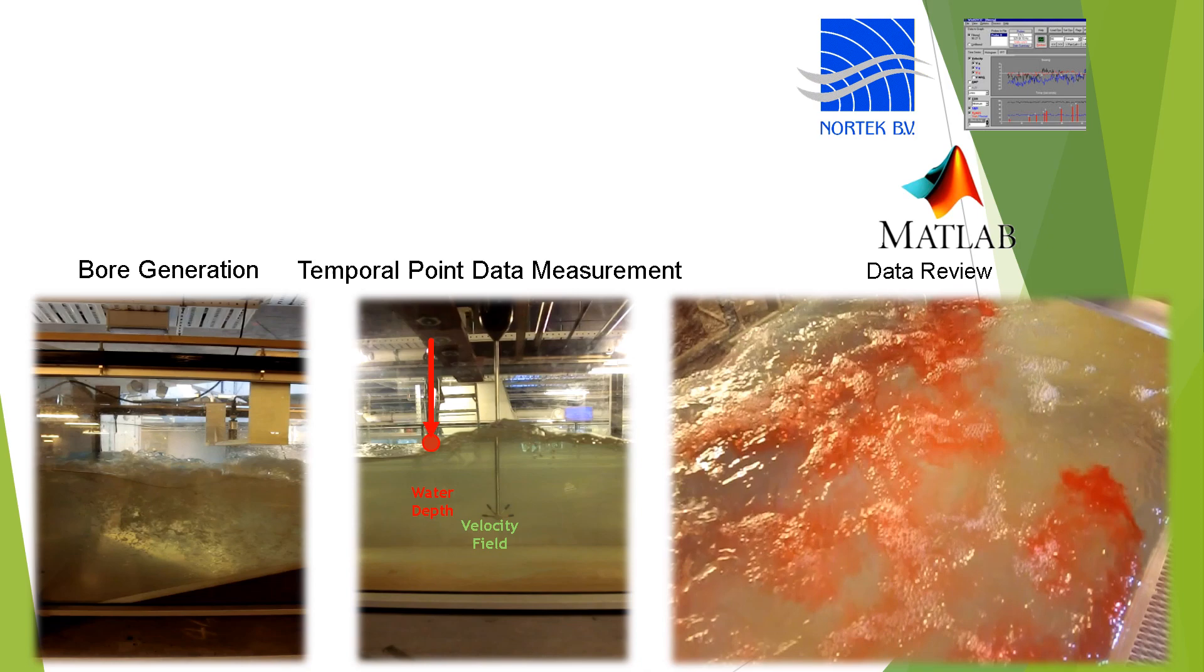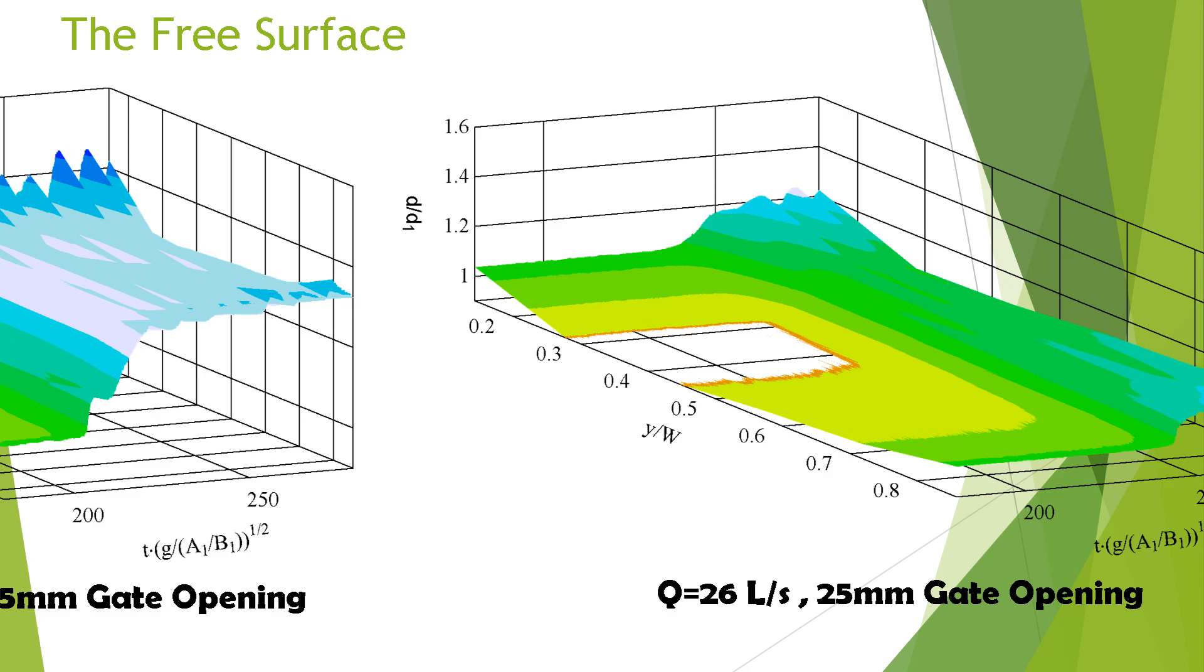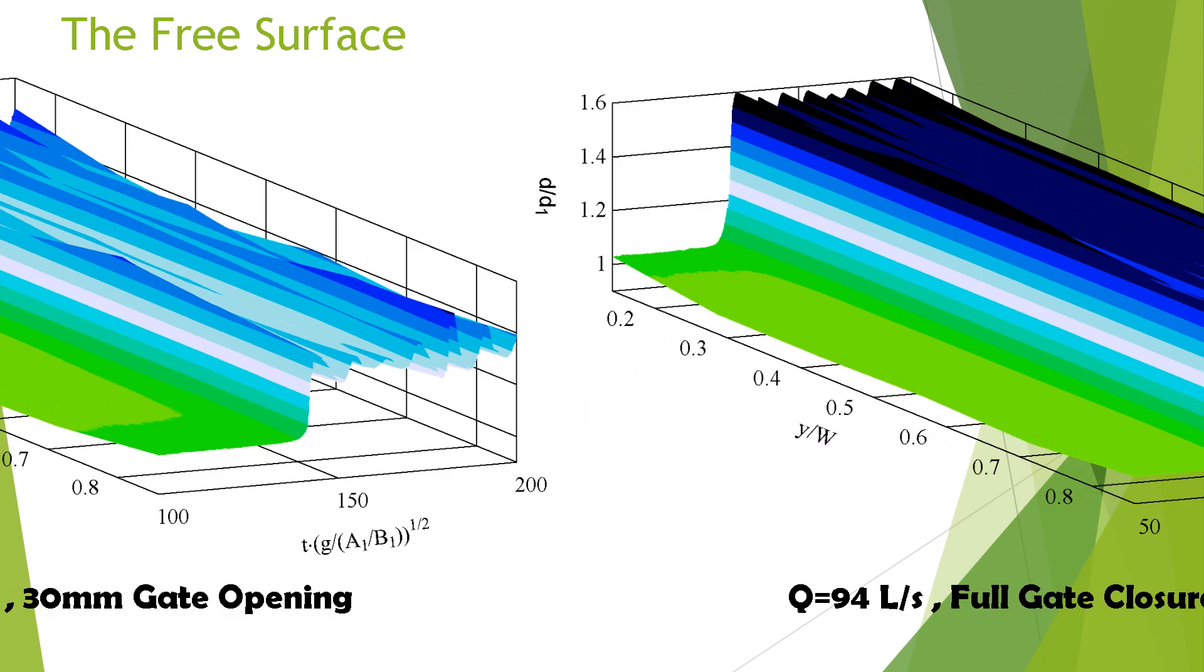A range of free surface profiles were quantified by varying the gate opening at bore generation. This was done to better model Froude similitudes by varying the celerity of the incoming bore.